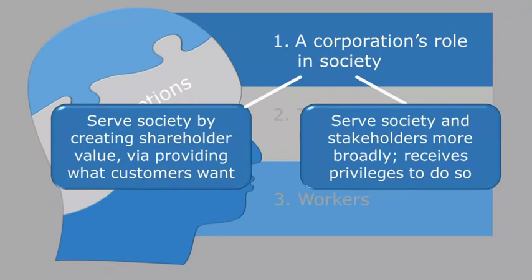Therefore, corporations have an obligation to serve society and stakeholders more broadly than simply by trying to maximize shareholder value. The first view points towards instrumental HR strategies that view workers as costs or inputs and that emphasize market competition and financial returns over the importance of workers. The second, stakeholder view, points more towards higher-road HR strategies that see workers as key stakeholders. We can see this applying to the public sector equally well, with different views as to whether public sector organizations should simply provide service at lowest cost or also pay attention to how employees are treated.